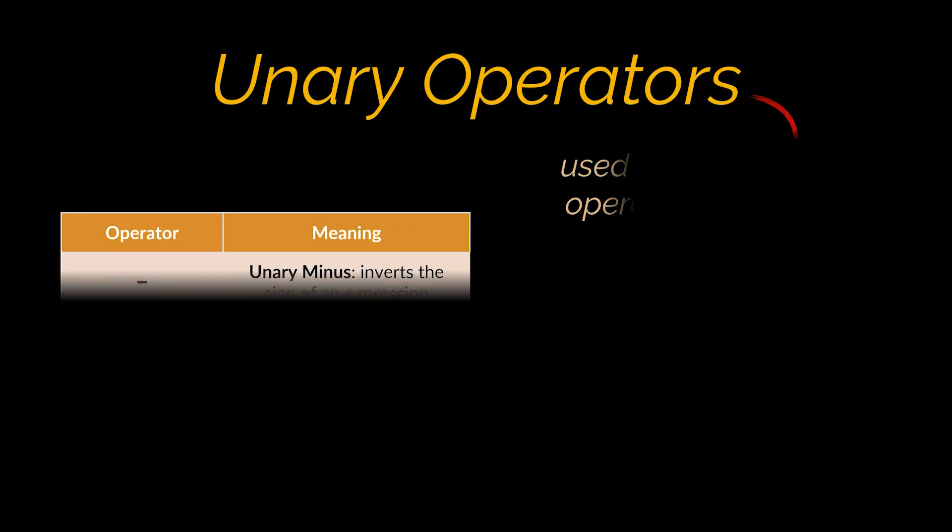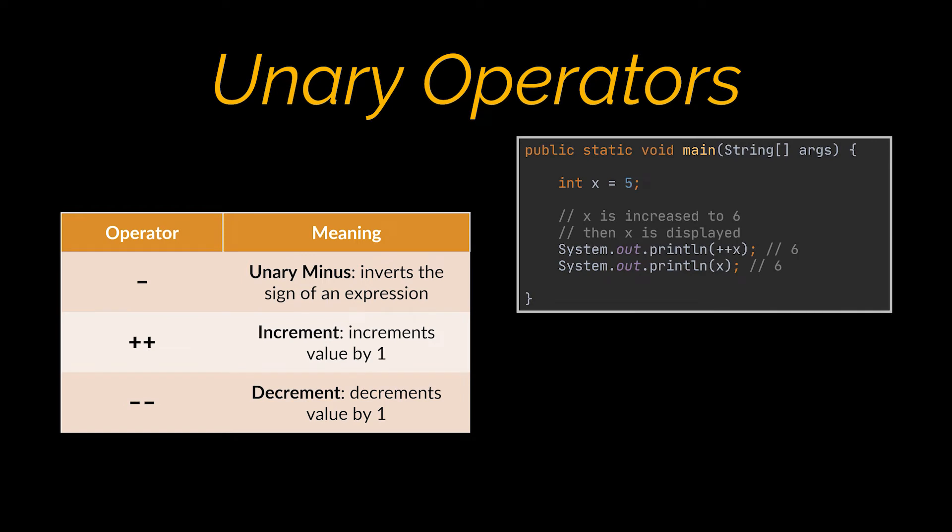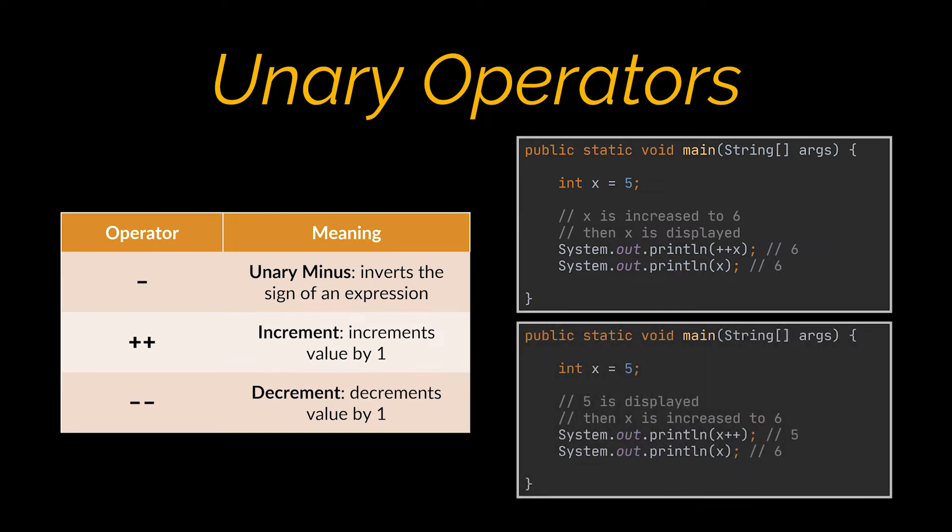Okay, unary operators are used with one operand only, and the operation applied on this operand is either to increment it, decrement it, or invert it. The increment and decrement operators can be used as prefixes or as postfixes. If you use the plus plus operator for example as a prefix, the value of the variable is incremented by one, then the value is returned. But, if you use the plus plus operator as a postfix, the original value of the variable is returned first, then the variable is incremented by one.